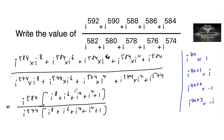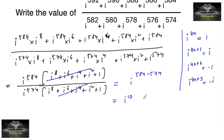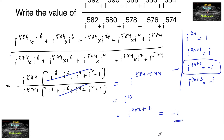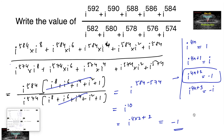The polynomial (i^8 + i^6 + i^4 + i^2 + 1) cancels from numerator and denominator. We are left with i^584 / i^574 = i^(584-574) = i^10. Since 10 = 4×2 + 2, we have i^10 = i^2 = -1. So the value of this expression is -1.